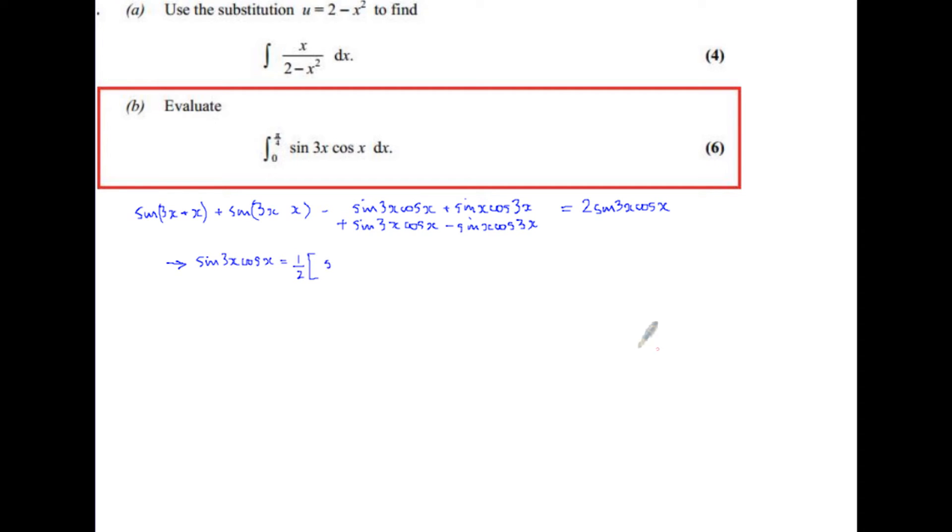So that means that the function in the integral of sin 3x cos x is equal to half of sin(3x+x), which is 4x, plus sin(3x-x), which is sin 2x. And so we're going to integrate that. The integral is half of the integral of 0 to π/4, sin 4x plus sin 2x, and integrate that with respect to x.